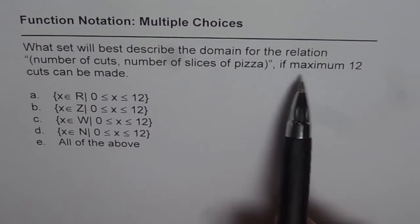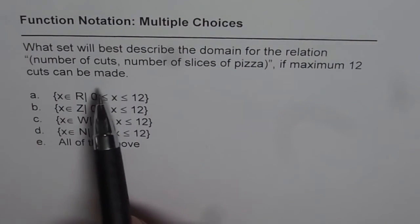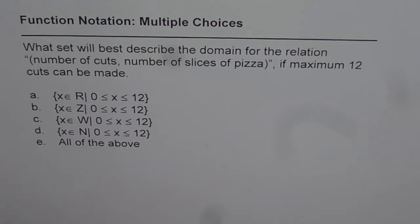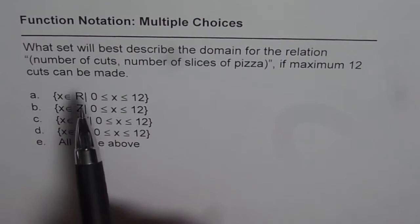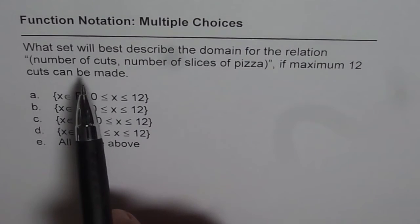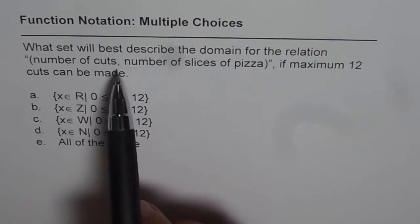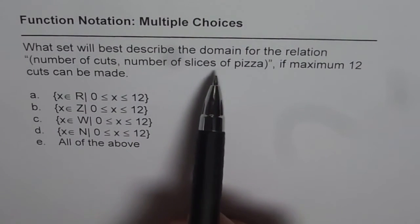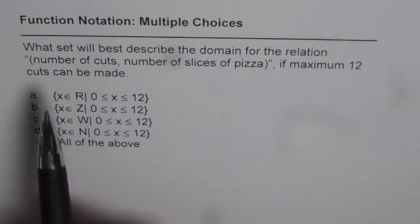If maximum 12 cuts can be made, the question really says you could make a maximum of 12 cuts. The relation is number of cuts to number of slices of pizza, so the domain is the set of number of cuts.